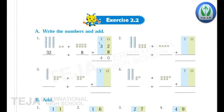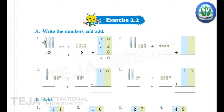Now the first bit in exercise 2 — Bit A: Write the numbers and add. Here the blocks are given. You should write the numbers and add them. Now look at the picture children, look at the screen here. The first one is done for us.